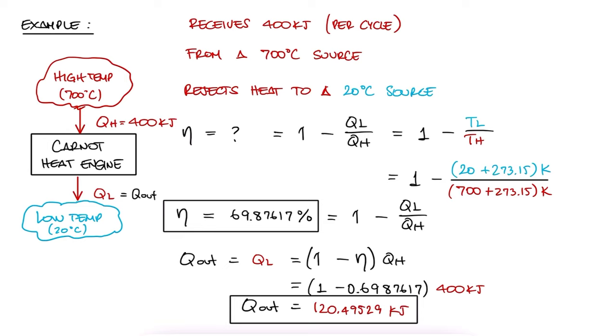Even if it's not part of the questions, we could easily calculate the work that this reversible heat engine produces. It would be the difference between Q in and Q out, or W net being 279.5 kJ per cycle. Like I said, if you want to check out more complex and interesting examples on the Carnot cycles topic, make sure to check out the links in the description of this video.